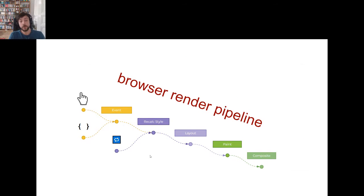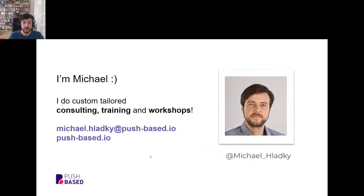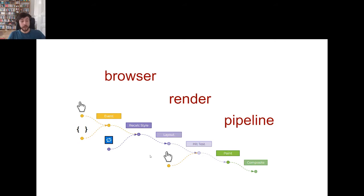We all need to understand the browser render pipeline — a very complicated set of processes tied together but very important. The first thing in the render pipeline is JavaScript in yellow, triggered from the script itself or from user interaction via event listeners. Then we have recalculate styles, layout, sometimes a hit test, paint, and compositing — to bring all the information into pixels.